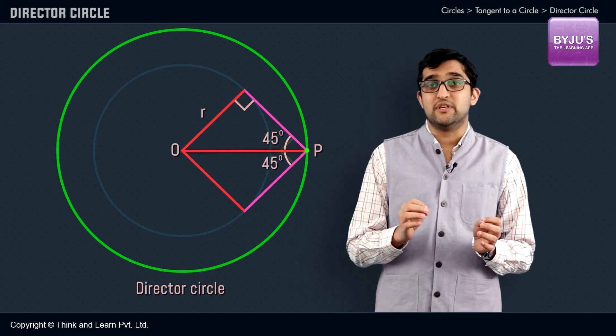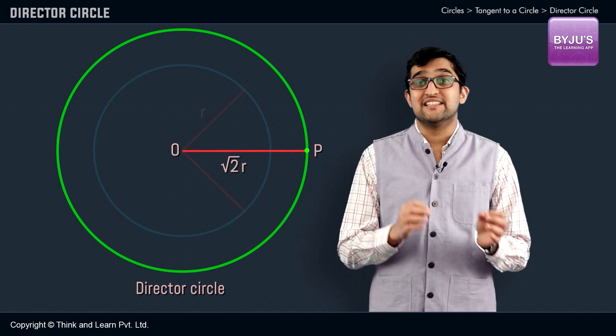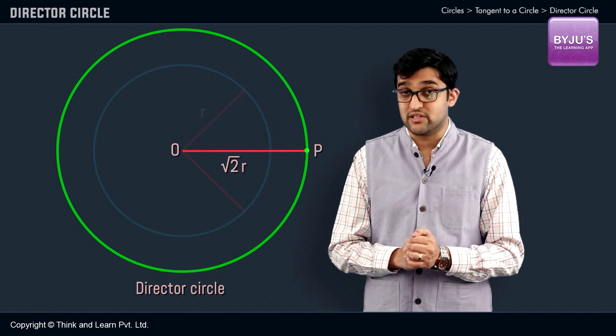In other words, OP will be equal to √2R. This is exactly the radius of the required director circle.